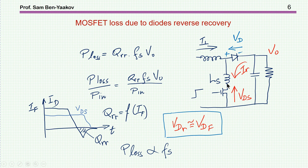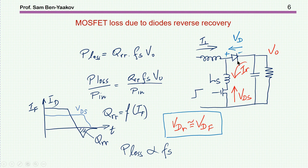Looking at the diode current: we see the forward current when the diode is carrying the inductor current. As the transistor is turned on, the current starts to flow through the transistor and the diode current reduces. The slope is dependent on the stray inductance. Eventually the diode current hits zero, but it will not stop — the diode will actually conduct both ways until all the charge carriers are swept out of the junction. For a while, the diode is conducting in reverse, and eventually the current tapers off to zero.